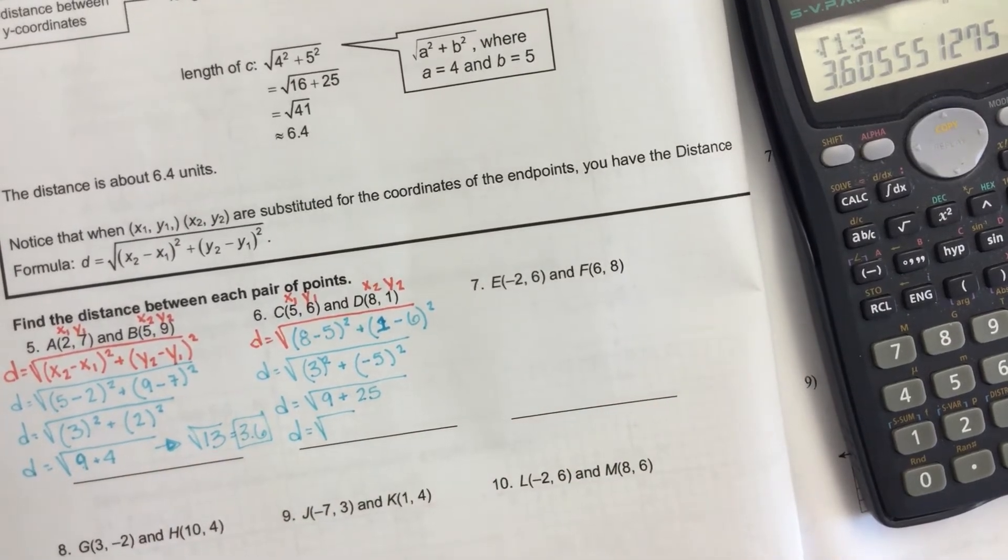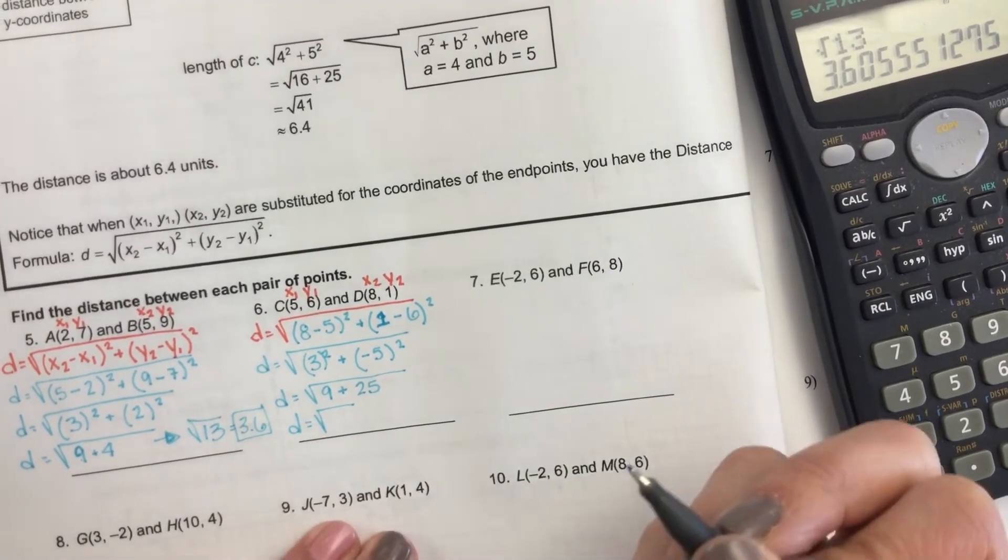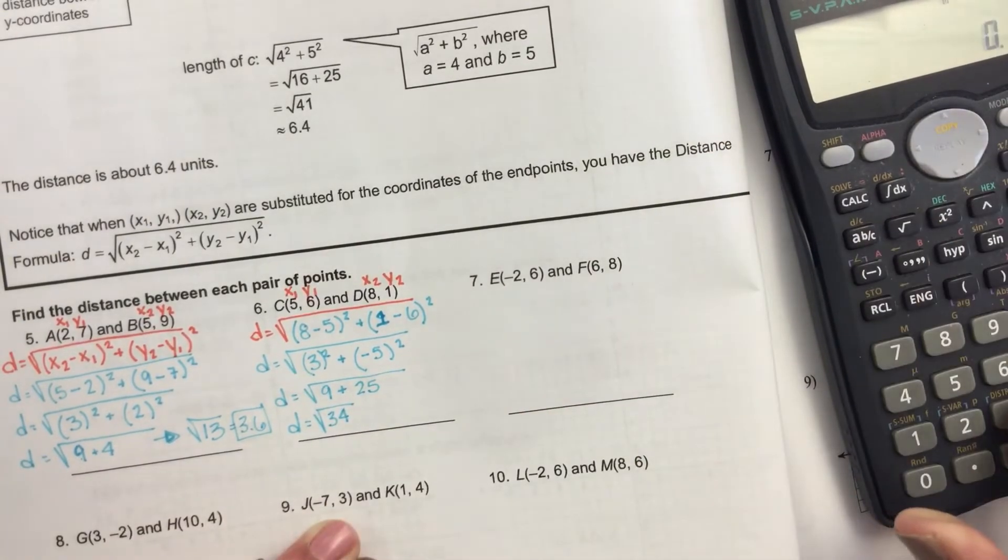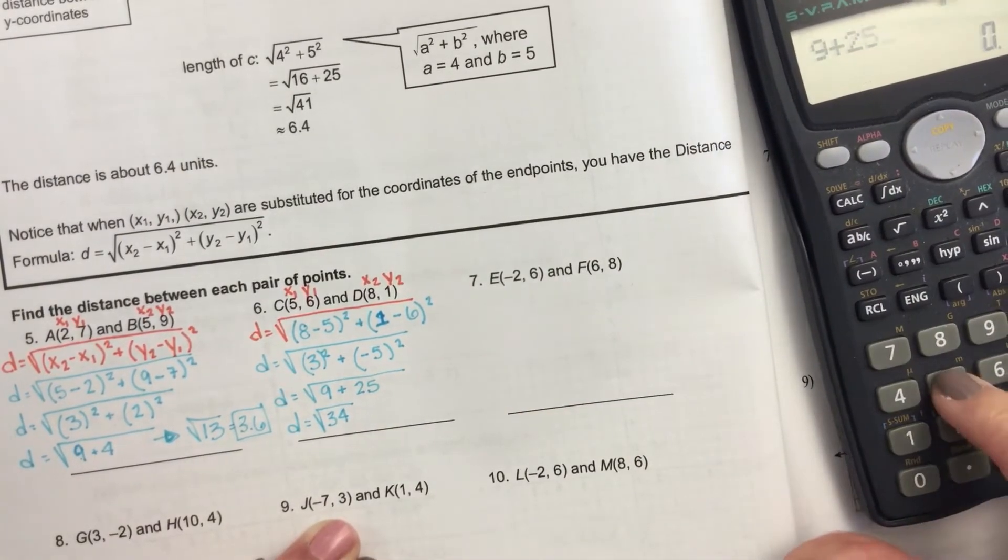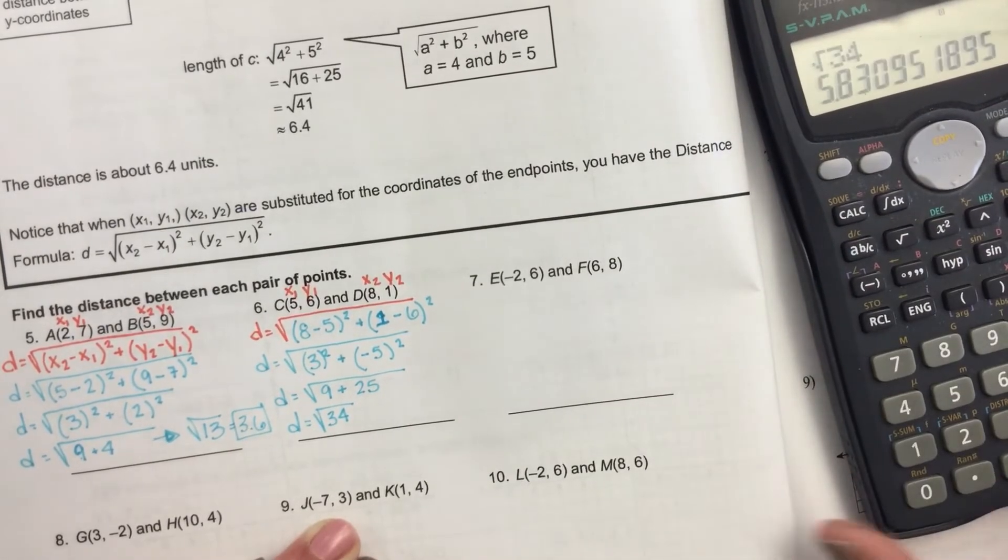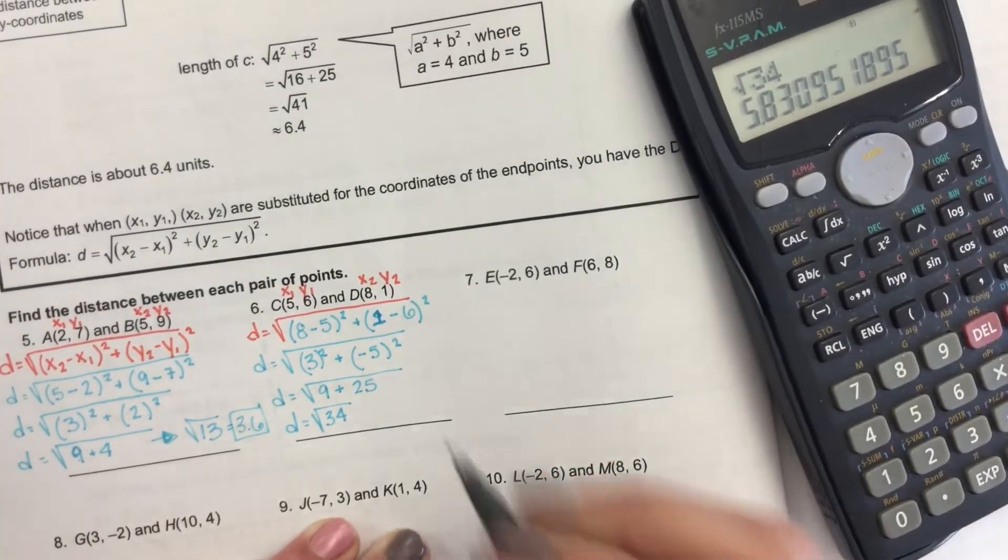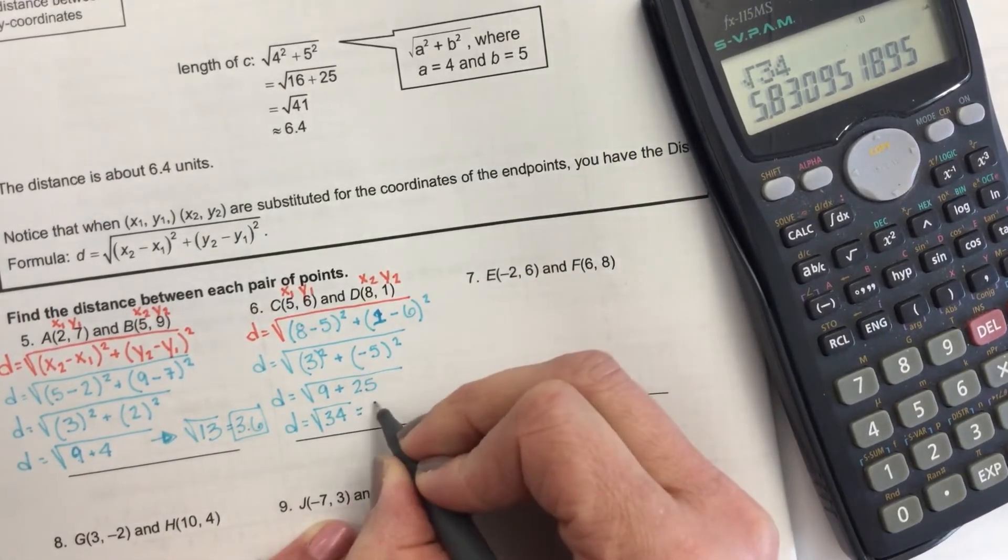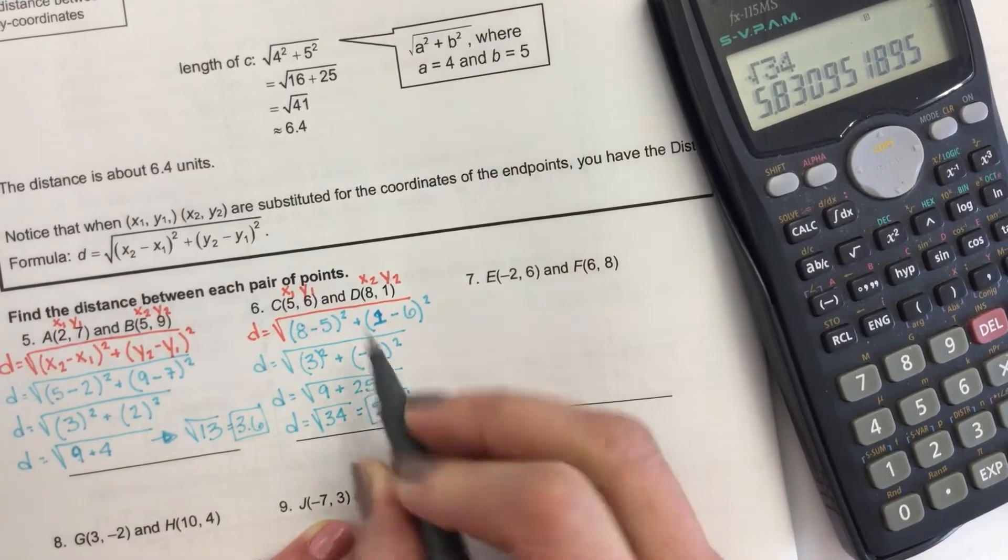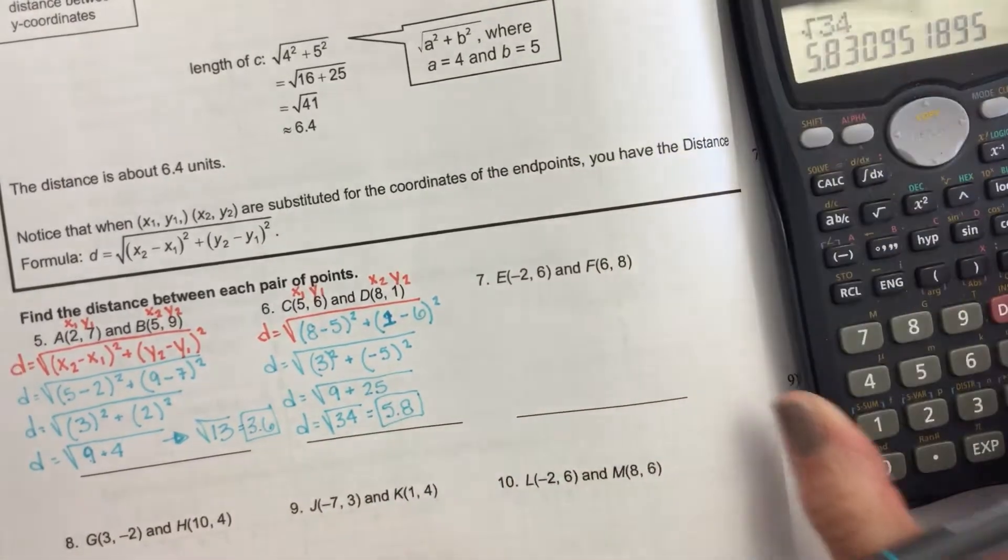And negative 5 squared - negative 5 times negative 5 is 25. 9 plus 25 is 34. And the square root of 34 is 5.8. And we're going to round to the tenths on these. So the distance between those two points is 5.8 units.